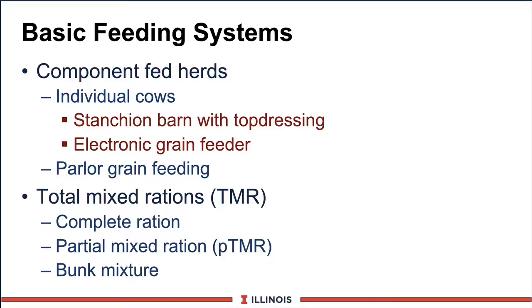Now let's look at some basic feeding system considerations. Generally speaking, there are two types of systems you'll find here in the U.S. The first one is the older system, referred to as component-fed herds, which means we are feeding the individual cow in her environment. The two most common systems would include a stanchion barn where the cow is confined and we will top-dress or give that feed to the cow — bringing the feed to the cow and giving her certain amounts in forks, buckets, pails, or scoops of feed, and we may top-dress more expensive nutrients to that animal. A second individual system is the electronic grain feeder, where the cow contains some type of ID system and the feeder automatically dispenses a predetermined amount of grain to that animal. Another component-fed approach would be feeding grain in the parlor, common in some pasture-based systems, though less popular in the United States as we go to more sophisticated feeding systems.